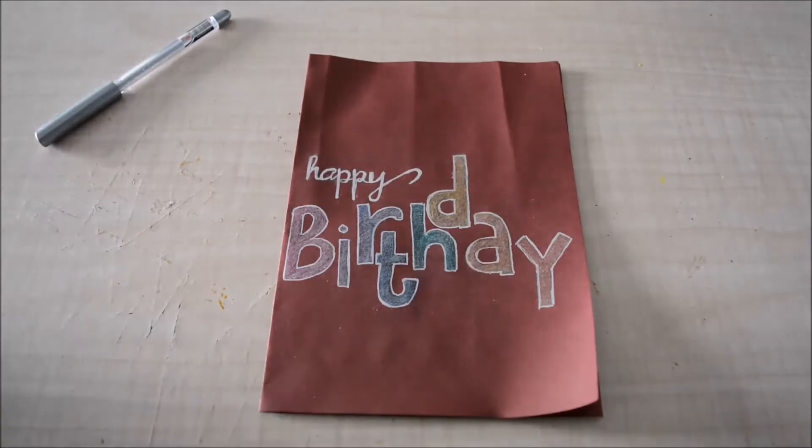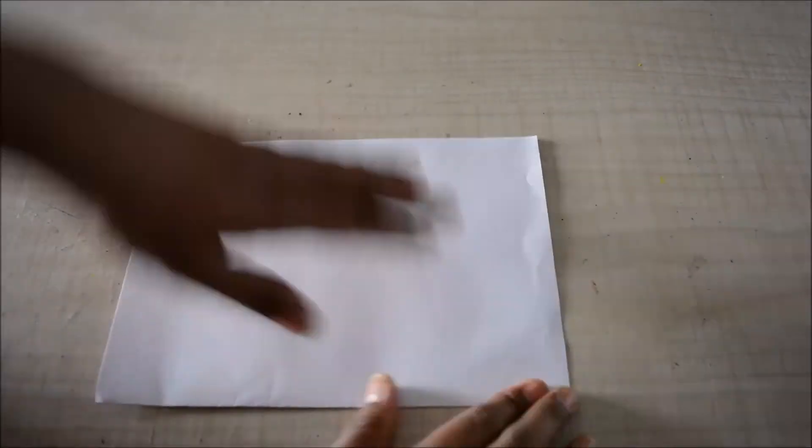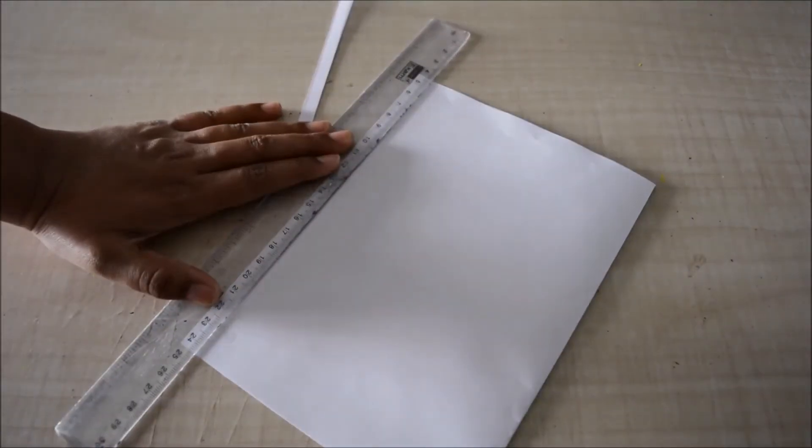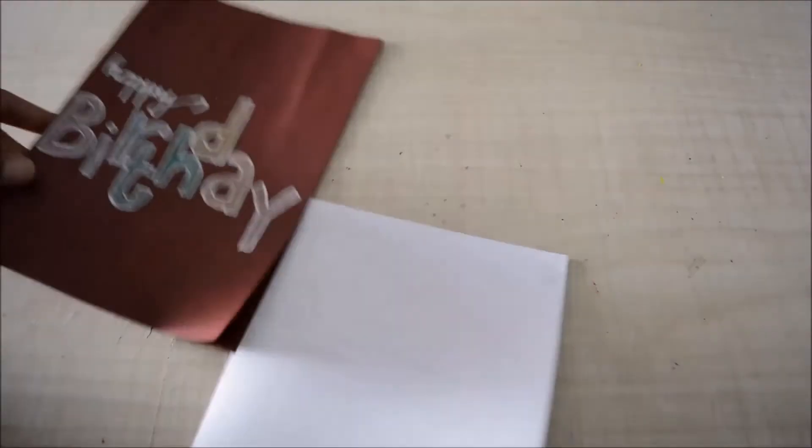Now I'll keep this aside and take a white A4 sized paper and fold it into half. And then I'll cut about a centimeter from the three open sides.